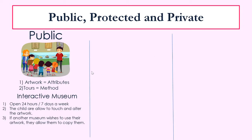If we imagine this public museum is open 24 hours a day, seven days a week, the children are allowed to touch and alter the artwork with no supervision. If another museum wishes to use any of the artwork, they're allowed to copy and display it in their own museum. That is very similar to public access rights. You can see the danger if you're trying to have sensitive data in your object — these children could accidentally damage the artwork, which can make your code stop working.